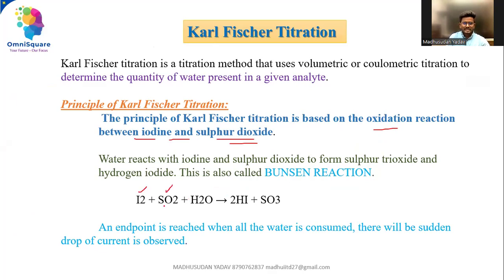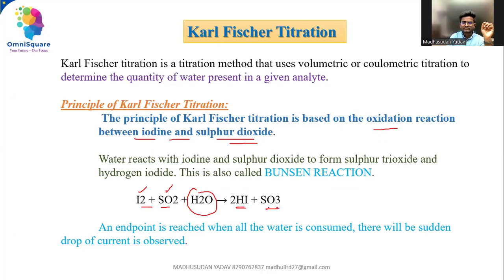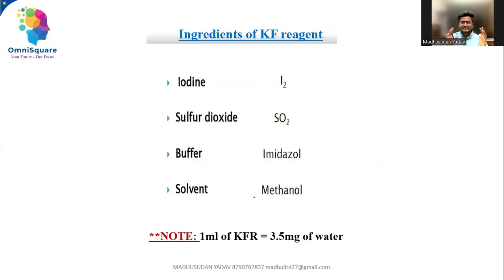Iodine and sulfur dioxide reacts with the water or the moisture present in the substance and gets converted into hydrogen iodide and sulfur trioxide. This is the composition of Karl Fischer reagent.